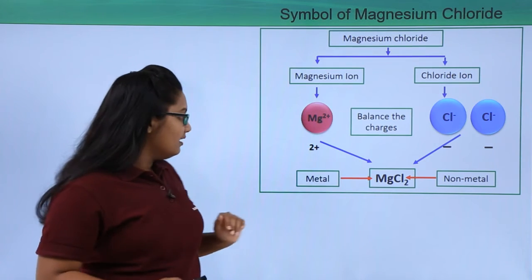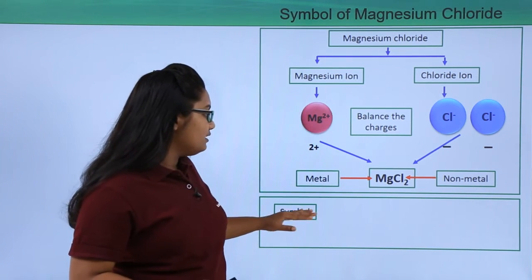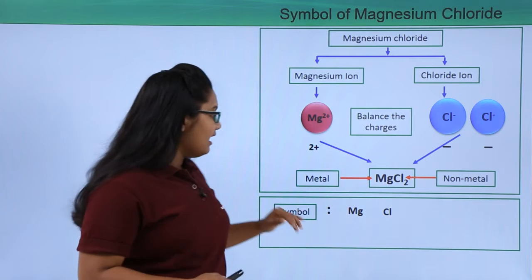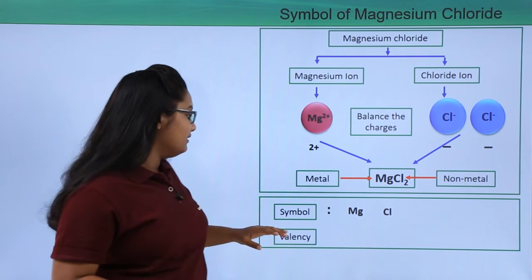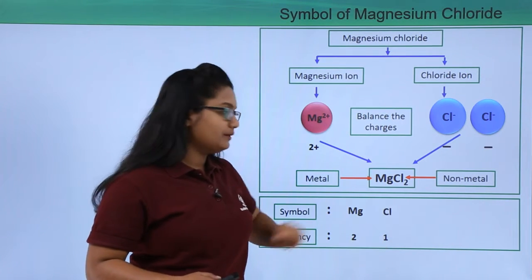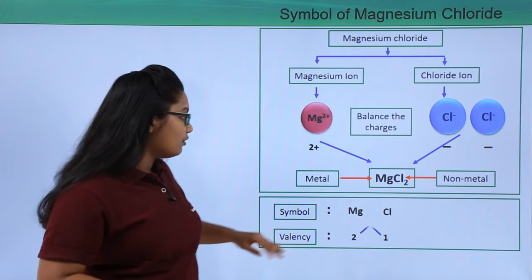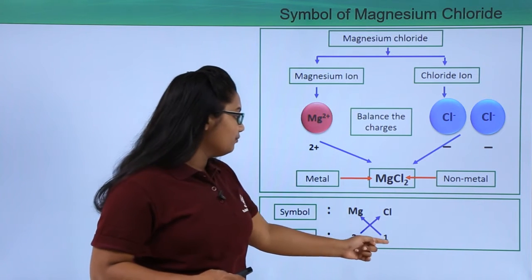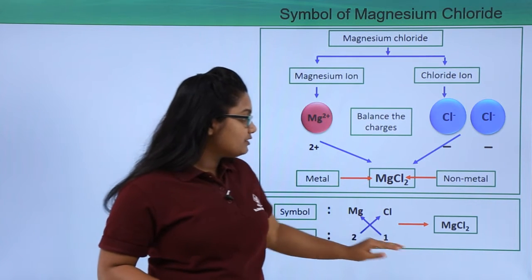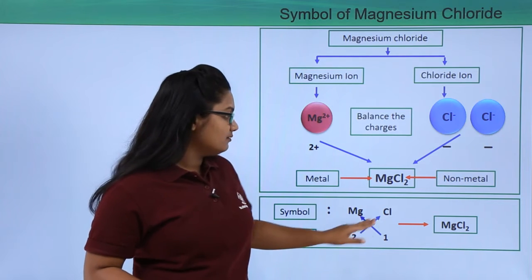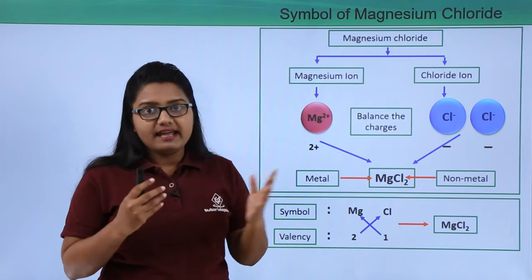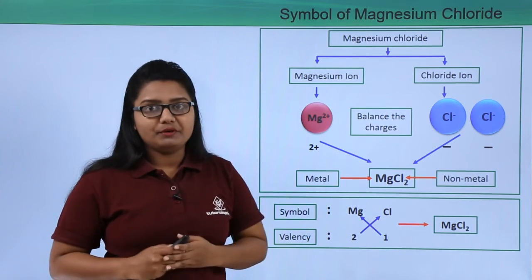The shortcut method: first write the symbols of the atoms involved — magnesium and chlorine. Then write their valencies: valency of magnesium is 2, valency of chlorine is 1. The next step is to cross over their valencies — 1 goes to magnesium and 2 goes to chlorine — giving the formula MgCl₂.